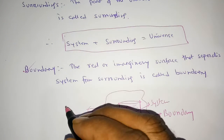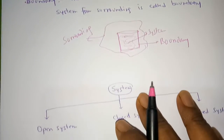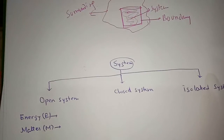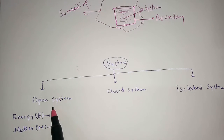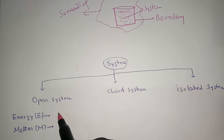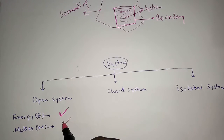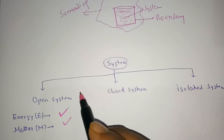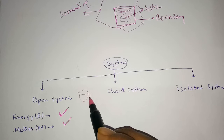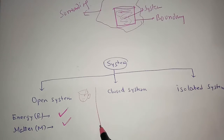Now the system is again classified as open system, closed system, and isolated system. Open system — for example, a cup of tea. From that we are getting energy; we are also taking in sugar and other things present in the tea. So from an open system, you get both energy and matter. Energy is the heat energy, and matter is the content of the tea.